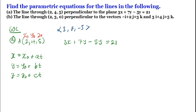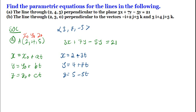We can now write out the parametric equations. x = 2 + 3t, since x₀ = 2 and a = 3. Then y = 4 + 7t, since y₀ = 4 and b = 7. And z = 5 − 5t, since z₀ = 5 and c = −5. This is how we find the equations of the line through that point and perpendicular to the plane.